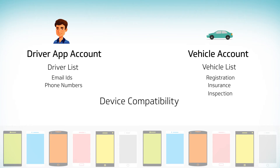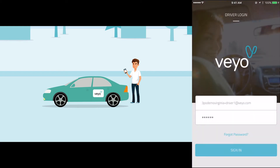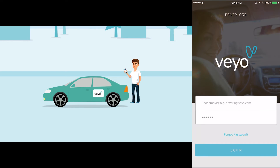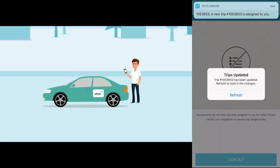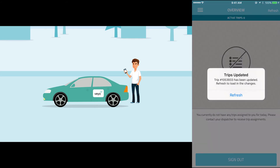You can check for device compatibility at partnerwithveo.com. To log into the Driver app, the driver will enter their email address or phone number. Their initial temporary password is set by VAO. To change the password, click Forgot Password and enter the email address associated with the driver's account. They will receive an email with instructions to change the password. Be sure to enable push notifications on the driver's devices so that they will receive real-time trip updates and notifications. Once the driver logs into the app, start by checking the overview of assigned trips. If no trips have been assigned, a no trip overview available message will be displayed. Press the Refresh button at the top right of the screen frequently to show any newly assigned trips.